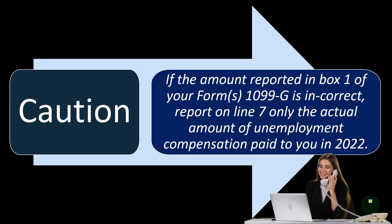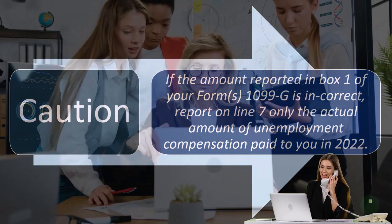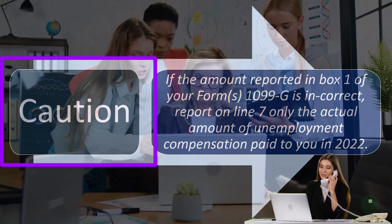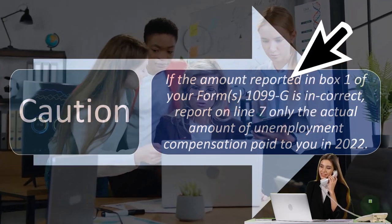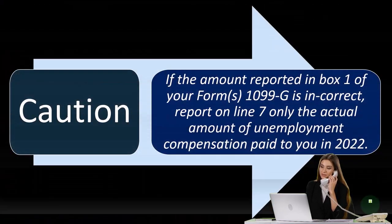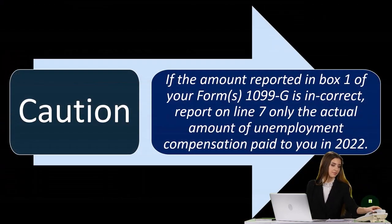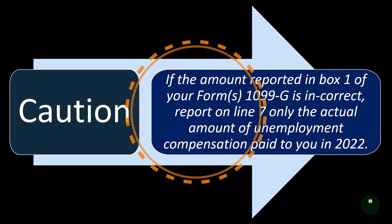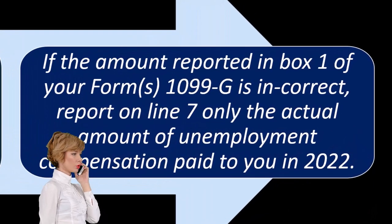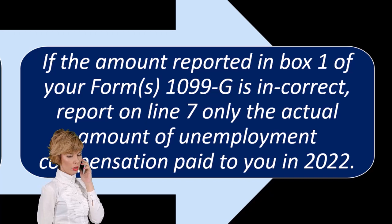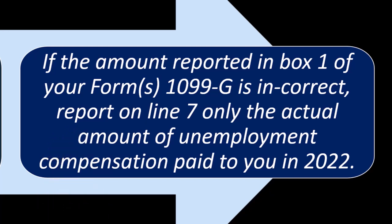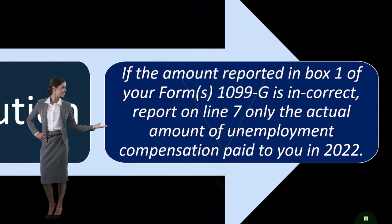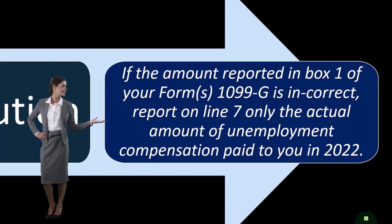Caution: if the amount reported in box one of Form 1099-G is incorrect, report on line seven only the actual amount of unemployment compensation paid to you in 2022. If you received a 1099-G but didn't actually receive unemployment, that's an indication that fraud may have taken place.